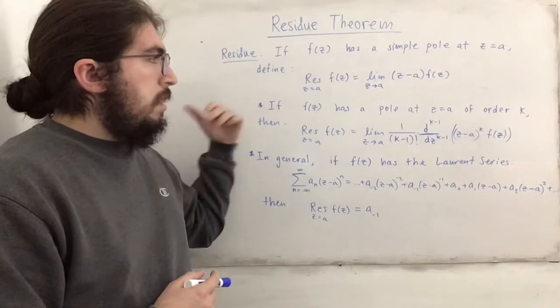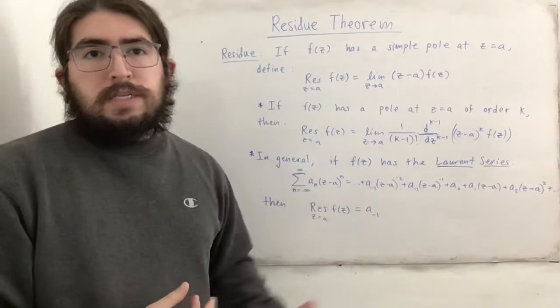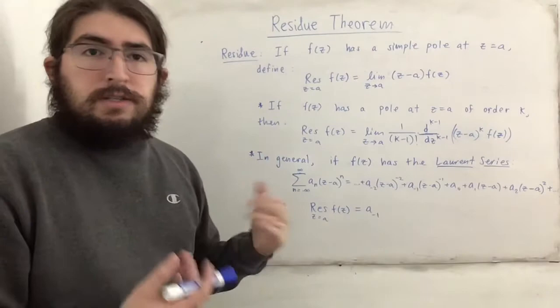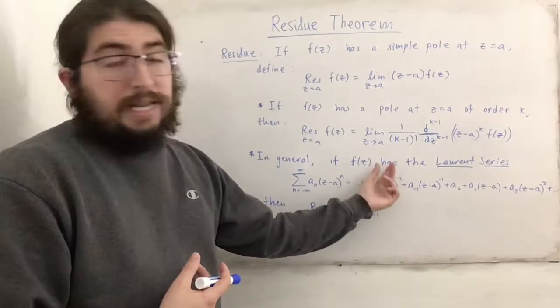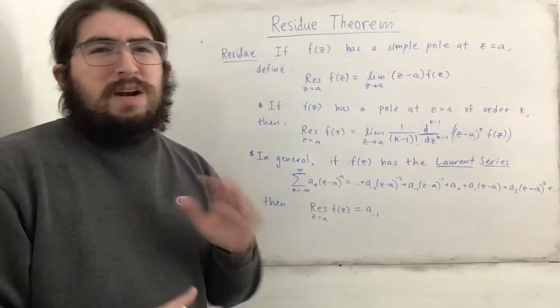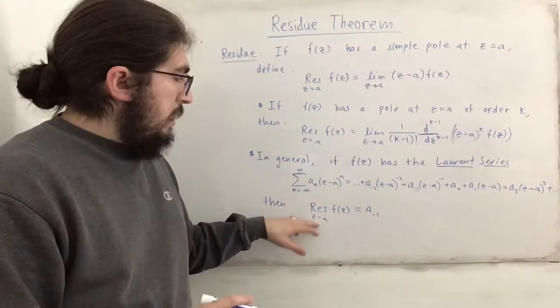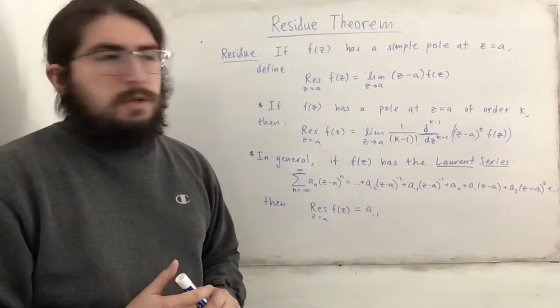In general, if f of z has a Laurent series expansion — which is like a Taylor series only it goes from n equals negative infinity to infinity, so we have negative-index coefficients as well as positive ones — we have terms like a sub negative 2 times z minus a to the negative 2, plus a sub negative 1 times z minus a to the negative 1, plus a sub 0, and so on. This is a Laurent series centered at z equals a. The residue of f of z at z equals a turns out to be the a sub negative 1 coefficient.